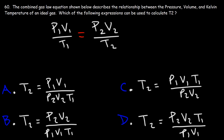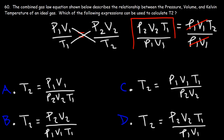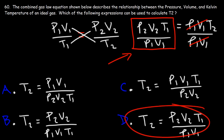Here we have two fractions separated by an equal sign, so we can cross multiply. This gives us P2V2 times T1, equal to P1V1T2. In this form it's easy to isolate T2 — all we need to do is divide both sides by P1V1. So T2 equals P2V2T1 over P1V1, which means answer choice D is the answer.